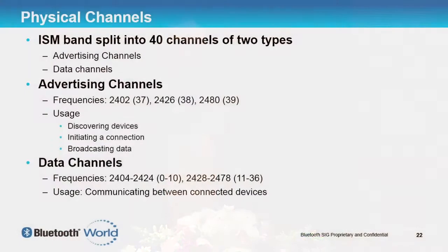If you want to send a reasonable amount of data, then we use the data channels. There are 37 of those, called channel 0 to channel 36. There's a break in the middle because there's an advertising channel in the middle, but effectively they're contiguous.